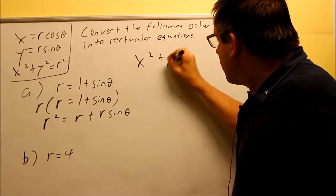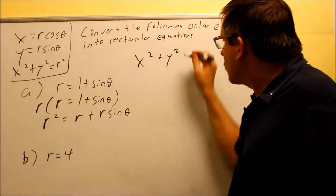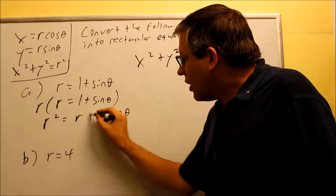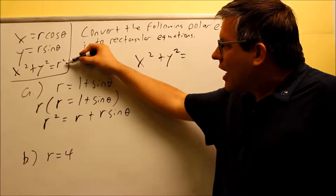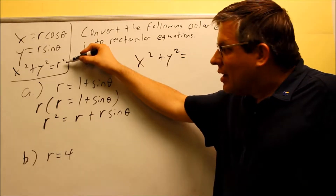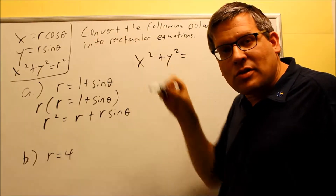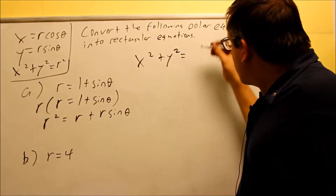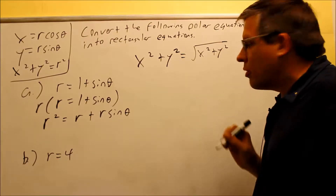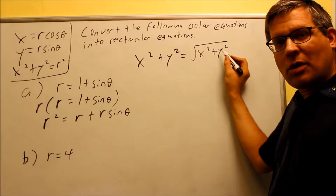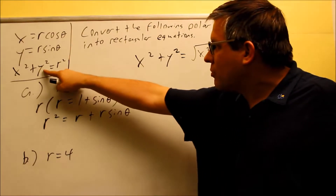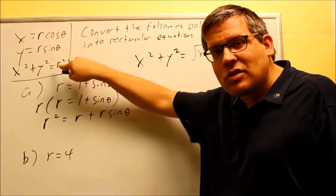I see an r squared right here, and I have a formula for r squared — that's going to be x squared plus y squared. That goes in place of r squared on the left-hand side. Now I don't have a formula for r by itself, but if I take x squared plus y squared equals r squared and square root both sides, I get the square root of x squared plus y squared. That's what I'm going to put in for r. We can't square root each term separately because of the plus sign, so this is as far as we can go.